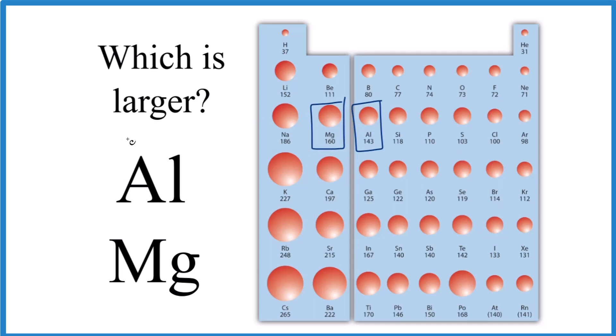So the trend for atomic radius on the periodic table is as we go down the groups, the atomic radius increases because we're adding an energy level, makes it larger. As we go across periods, the atomic radius decreases. And that's what we're seeing.